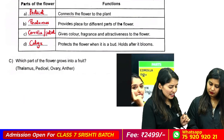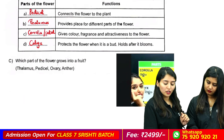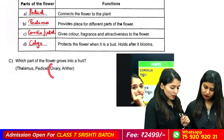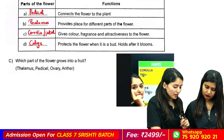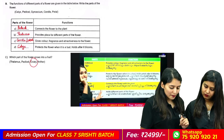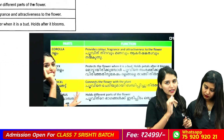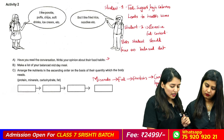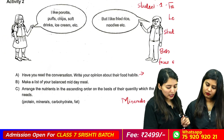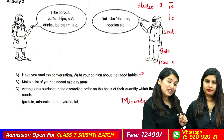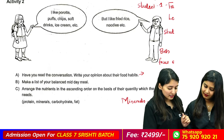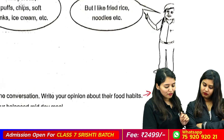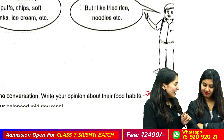Which part of the flower grows into the fruit? Food items are made by this. The fruit item — over the fruit item — okay. This is the flower. That functions are one of the details. This is the activity. I like porota, puffs, chips, soft drinks, ice cream — all unhealthy food items.